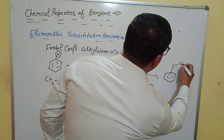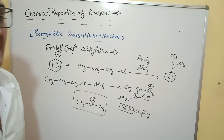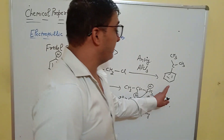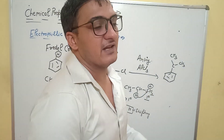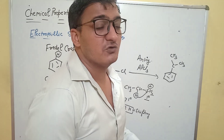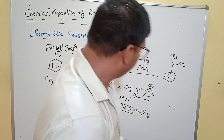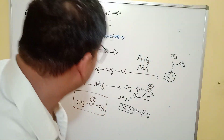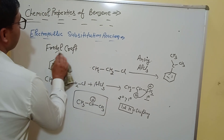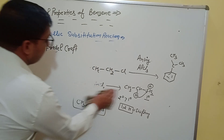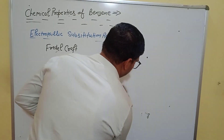The product formed is cumene (isopropylbenzene, with CH(CH3)2 group). Cumene is a very useful compound and is used in the preparation of phenol. This concludes the Friedel-Crafts alkylation examples. Next we study the fifth reaction: Friedel-Crafts acylation.